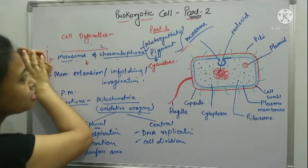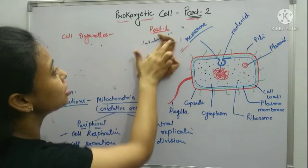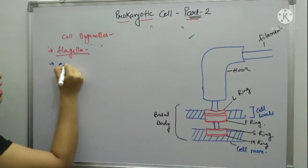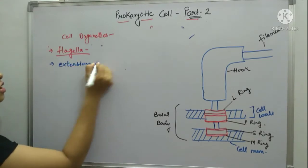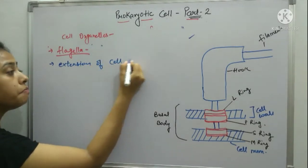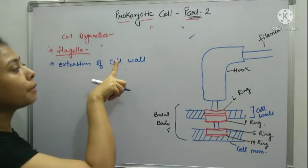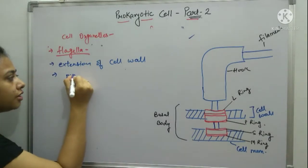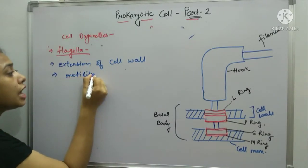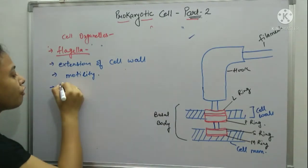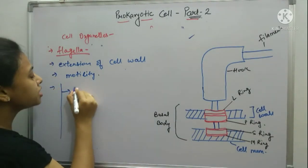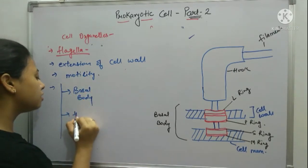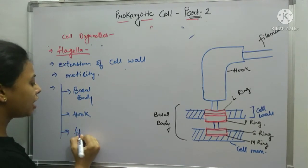Now let's have a look at the next point: flagella. The structure of flagella — it is basically an extension from the cell wall, not the cell membrane. Its main role is in motility. If we look at its structure, it consists of three parts: one is the basal body, second is the hook, and the third one is the filament.